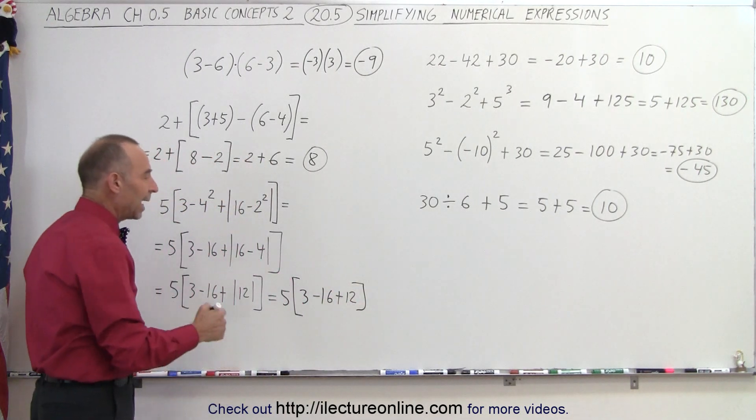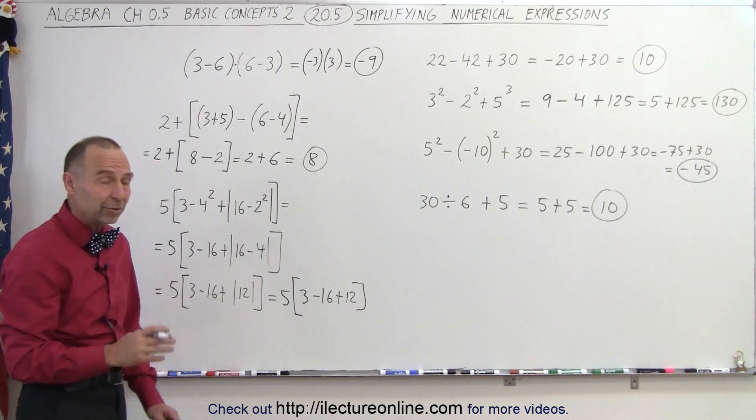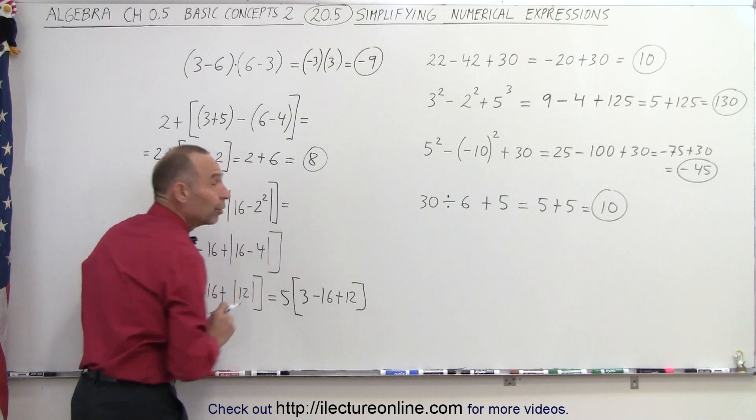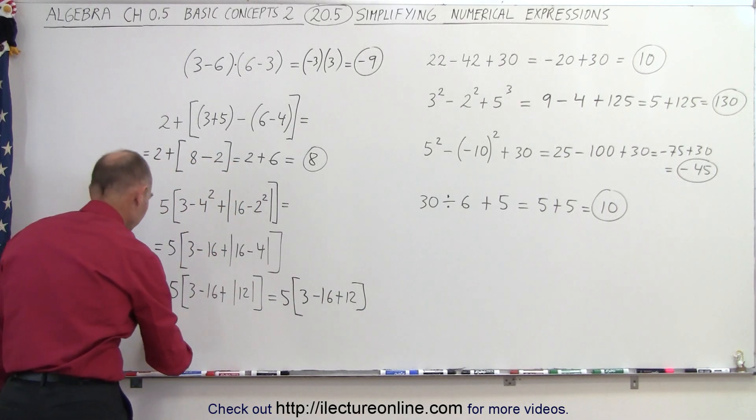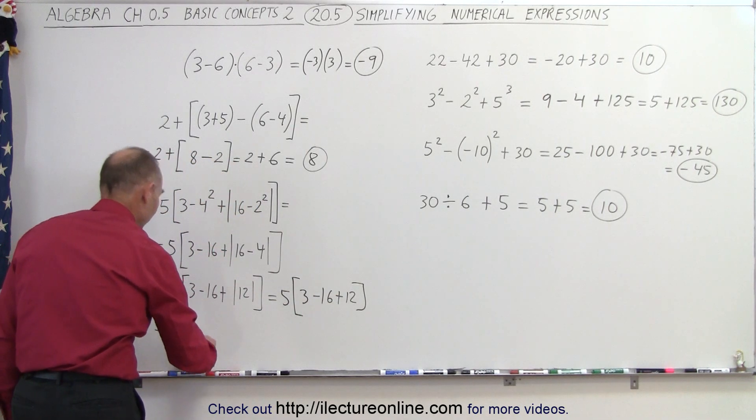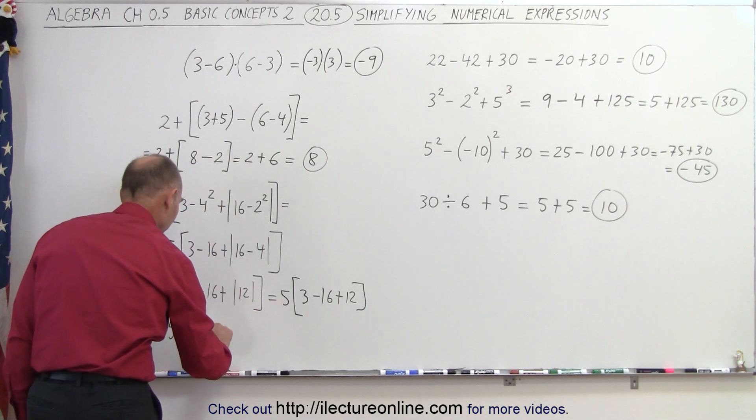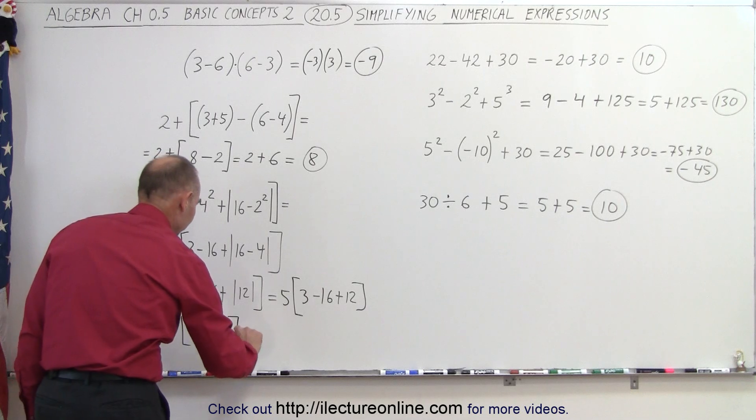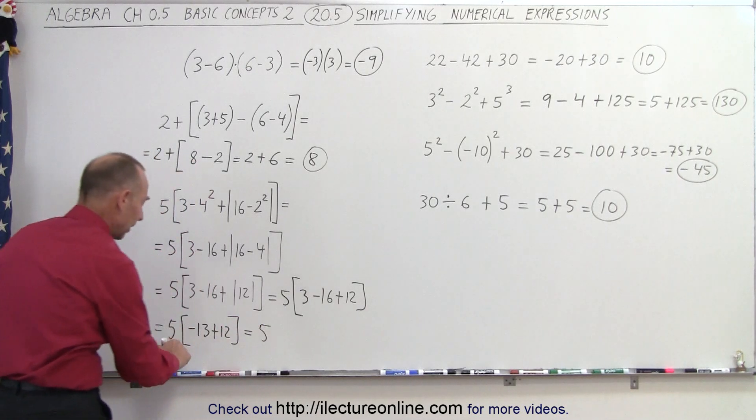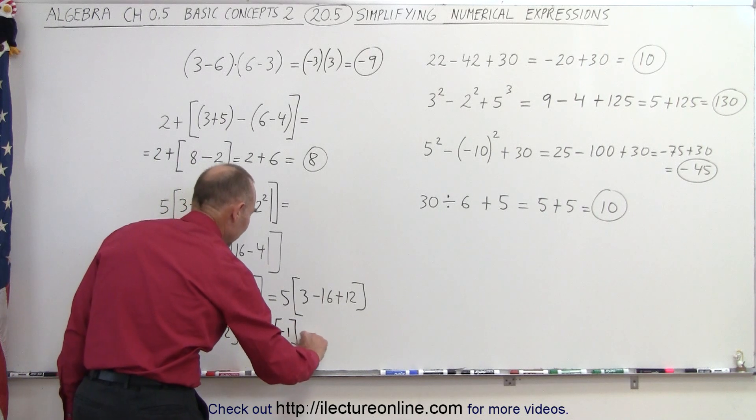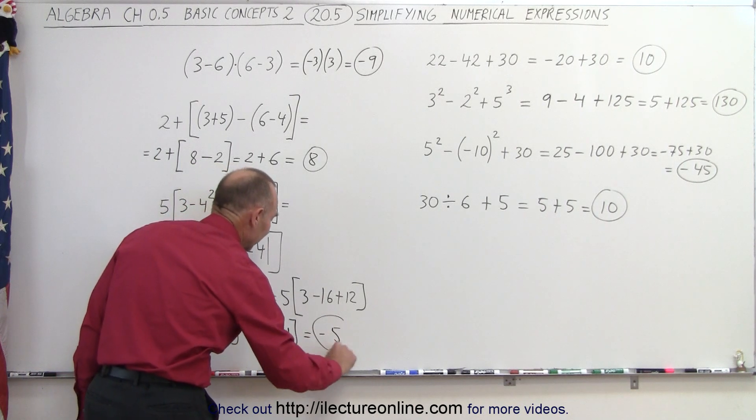And now we can add and subtract what's inside the brackets before we do the multiplication, because we need to solve what's inside the brackets before we do the multiplication. So this becomes equal to 5 times, we go from left to right, 3 minus 16 is minus 13, plus 12. And when we add those two together, minus 13 plus 12 is negative 1. And 5 times negative 1 is negative 5.